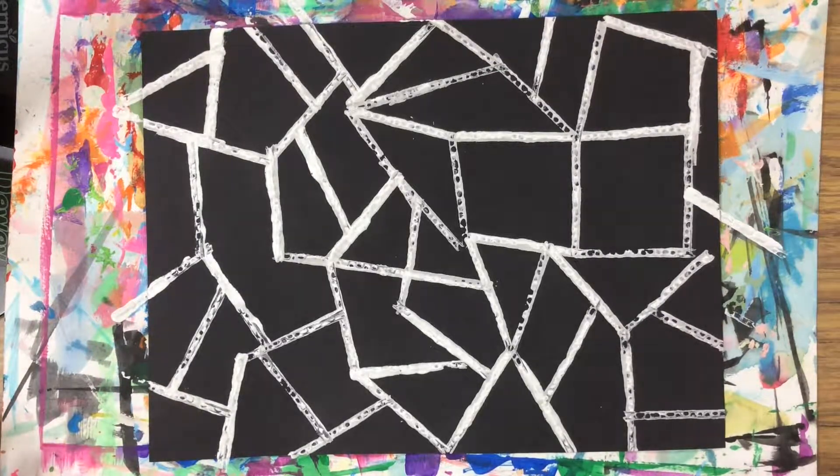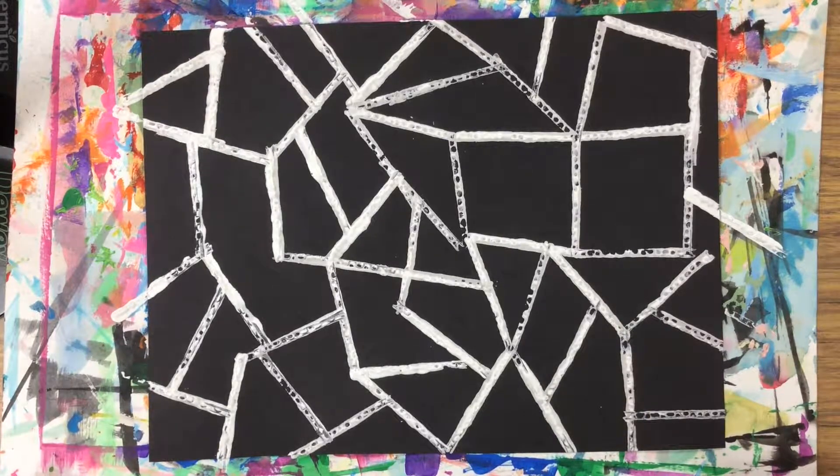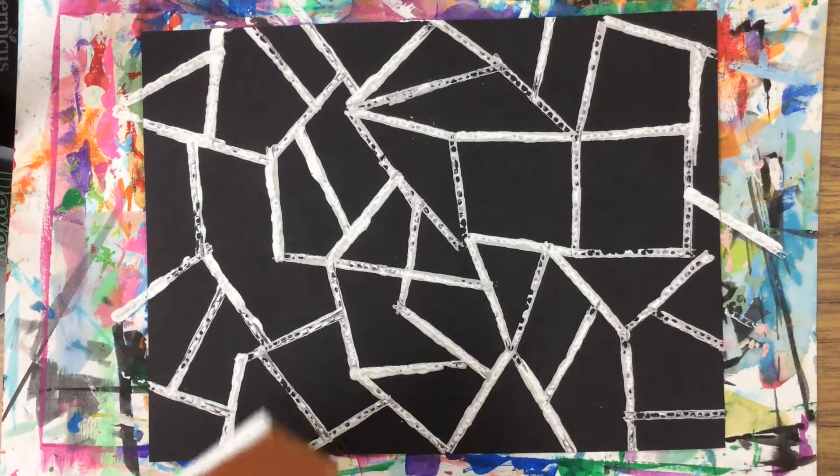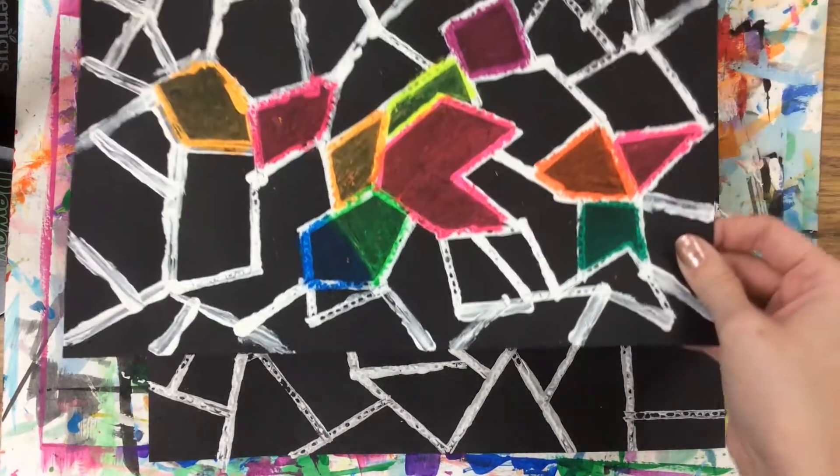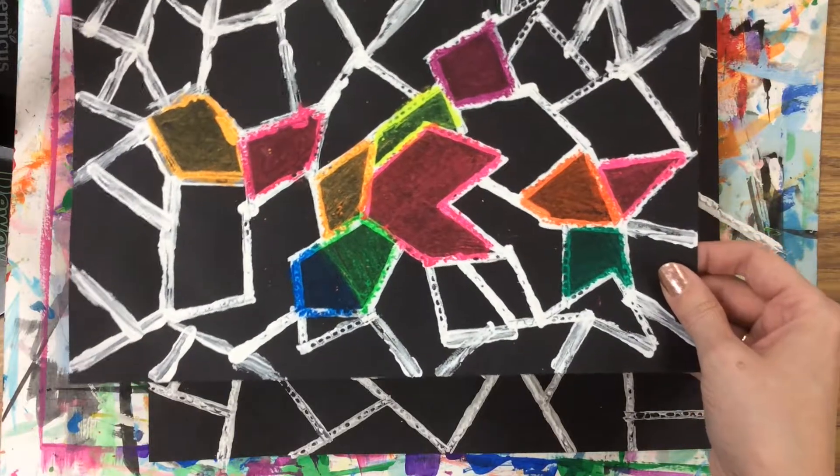All right, now that I've filled my paper with really cool printed lines to create geometric shapes, I'm going to let this dry, and next week we're going to start adding some neon oil pastel in our shapes to make it really bright and colorful.